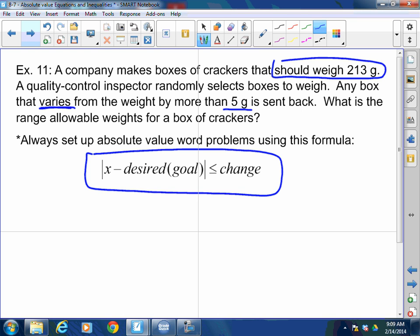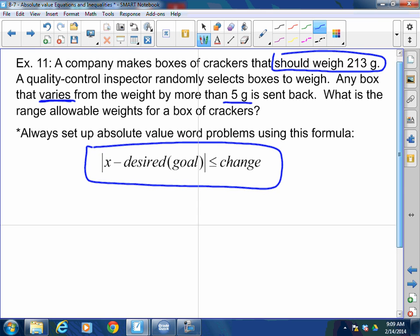This is what people like, you know, Chips Ahoy and stuff like that, they do this all the time. Look at the equation, guys. It's always going to be absolute value of x minus the desired or the goal. What's the desired here? 213. Thank you, my brothers.